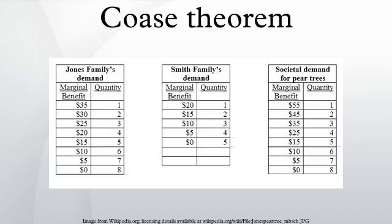Nevertheless, the Coase Theorem is considered an important basis for most modern economic analyses of government regulation, especially in the case of externalities, and it has been used by jurists and legal scholars to analyze and resolve legal disputes. George Stigler summarized the resolution of the externality problem in the absence of transaction costs in a 1966 economics textbook in terms of private market and social cost, and for the first time called it a theorem.